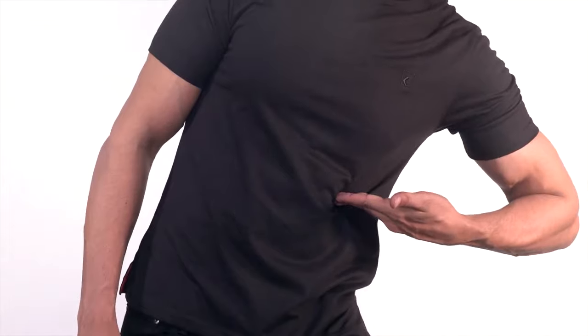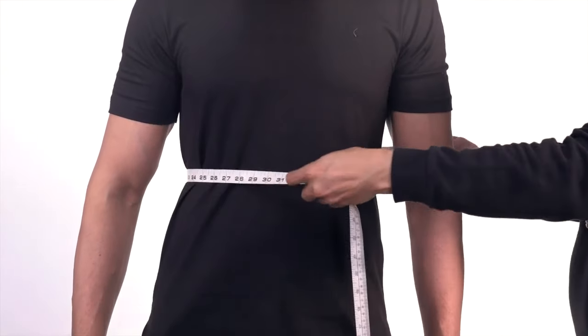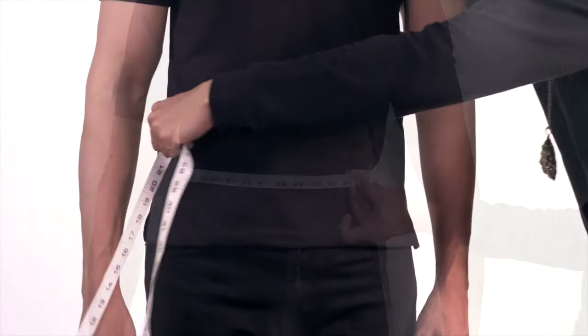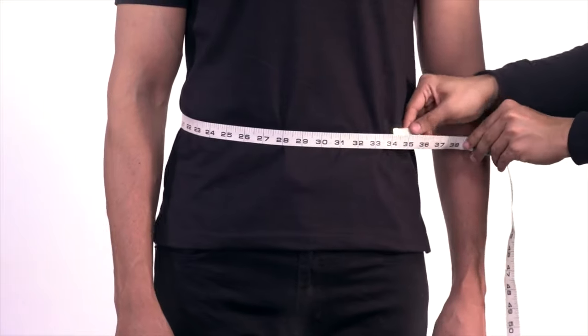For natural waist and lower waist measurements, wrap the tape around the smallest part of the waist, an inch or two above the belly button, and the widest part of the waist, typically at the belly button or just below the hips, respectively.